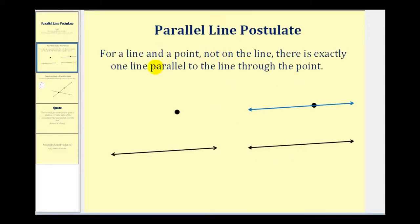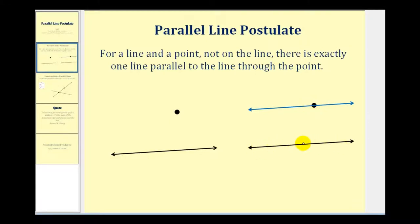The Parallel Line Postulate states that for a line and a point not on the line, there's exactly one line parallel to the given line through the point. So if here's our given line and here's the point, there's only one parallel line passing through this point — it would be this blue line here. Any other line passing through this point would eventually intersect this black line.